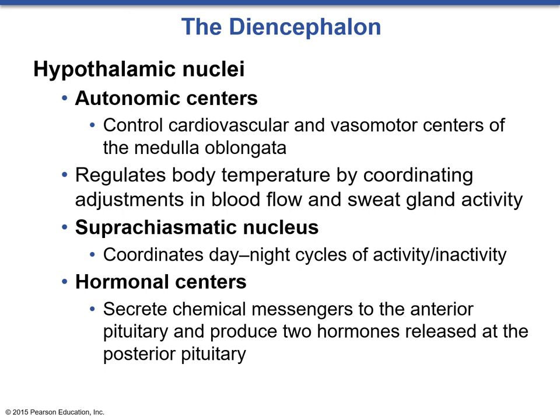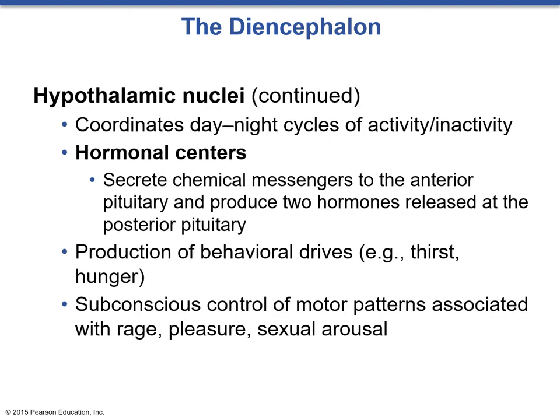The hypothalamus also has hormonal centers, which secrete different chemical messengers to the anterior pituitary gland and produce two hormones released at the posterior pituitary. Beyond its endocrine functions, the hypothalamus controls circadian rhythms and coordinates voluntary and autonomic functions such as the fight-or-flight response. It additionally has many behavioral drives — dealing with thirst and hunger — and is a center of subconscious motor patterns associated with rage, pleasure, and sexual arousal.